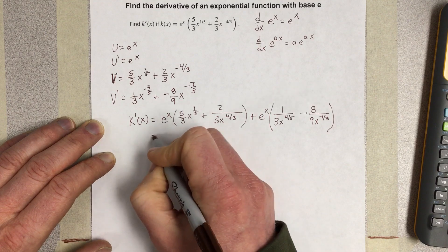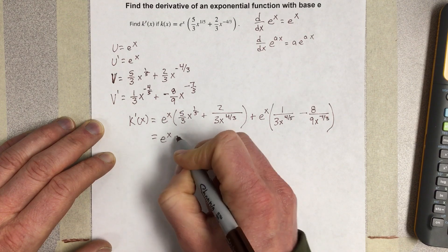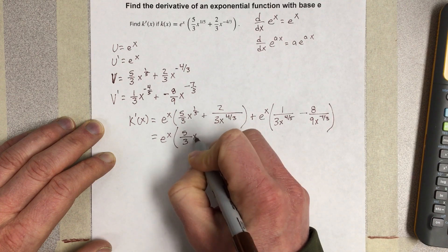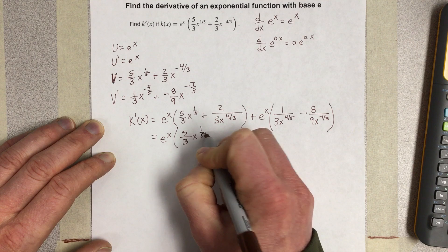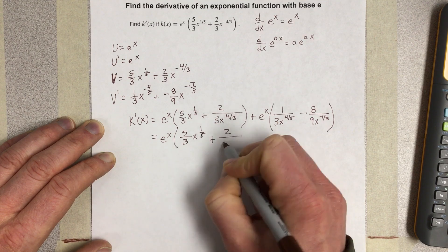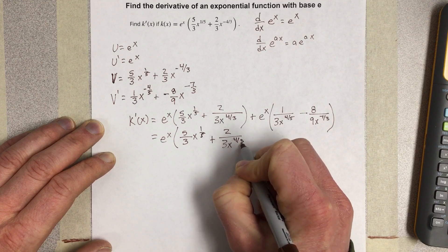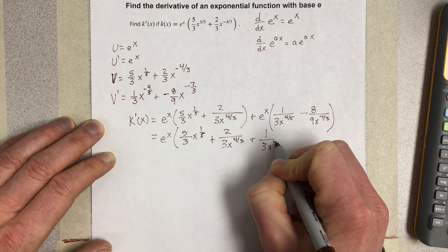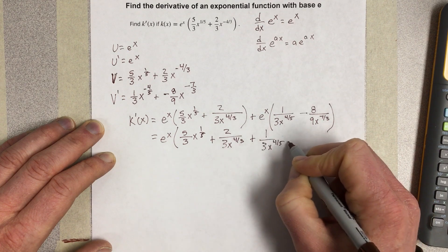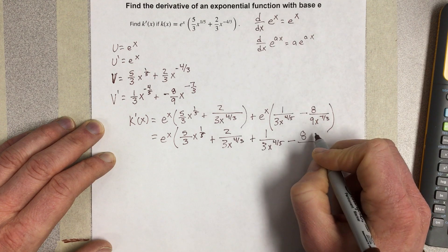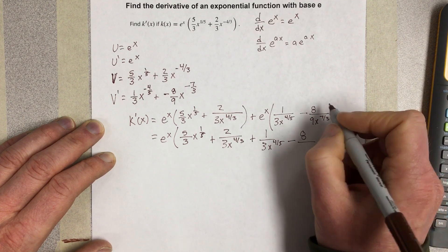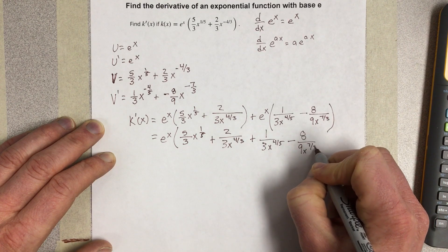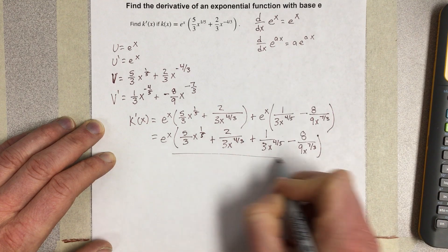So factor out e to the x there, and you would have e to the x times five thirds x to the one fifth plus two over three x to the negative four thirds plus one over three x to the negative four fifths minus eight over nine x to the negative seven thirds. And that would be the derivative.